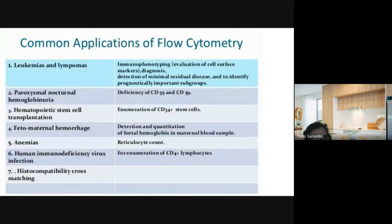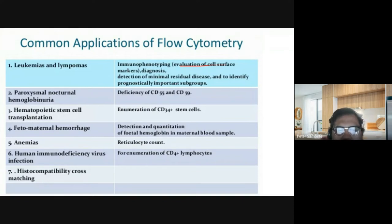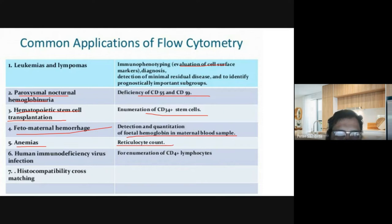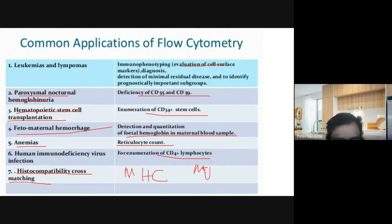Here are the common applications of flow cytometry. It can be used for leukemias and lymphomas — immunophenotyping, evaluation of cell surface markers, detection of minimal residual disease, and identifying prognostically important subgroups. There's also paroxysmal nocturnal hemoglobinuria — deficiency of CD55 and CD59. Hematopoietic stem cell and transplantation (CD34+), fetomaternal hemorrhage detection of fetal hemoglobin in maternal blood sample, anemias used to count reticulocytes, HIV for the enumeration of CD4 lymphocytes, and histocompatibility cross matching — MHC (Major Histocompatibility Complex).